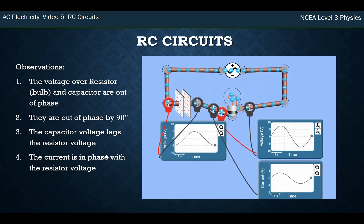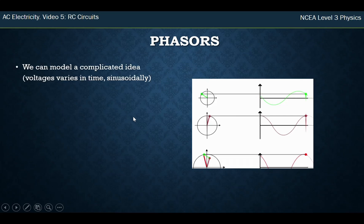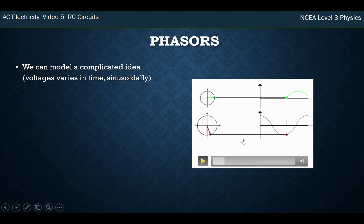We're going to use this thing called phasors. We've got a complicated situation here, which is something that varies over time—a sinusoid or sine wave varying over time. But there is a simplification we can make, and that is that we can project the height of this onto a circle, and something going around at steady speed in circular motion exactly matches the amplitude of our sine wave.